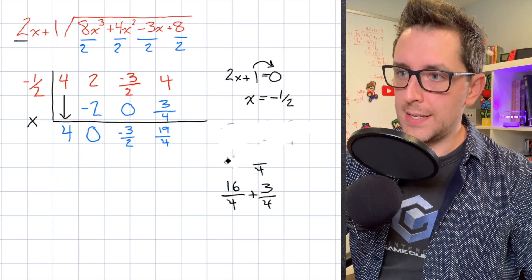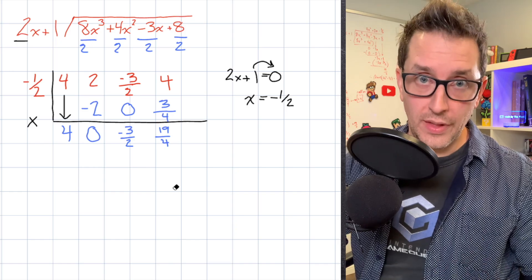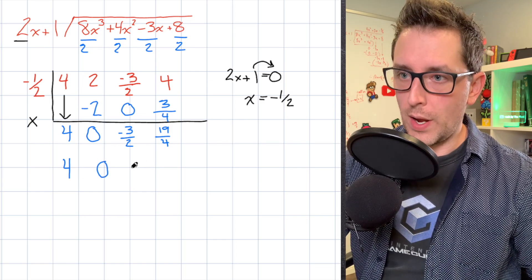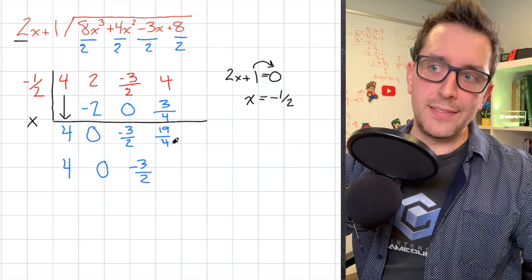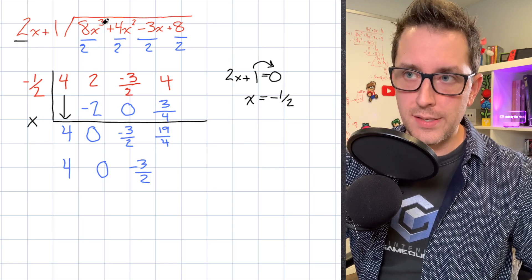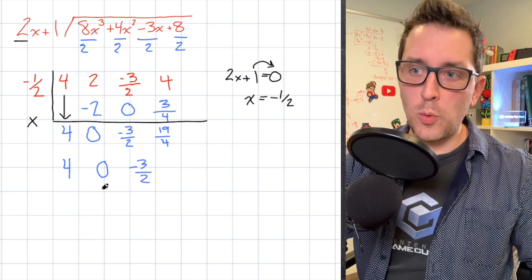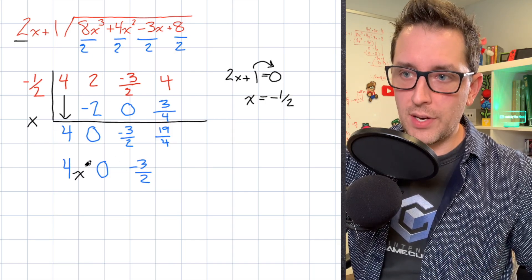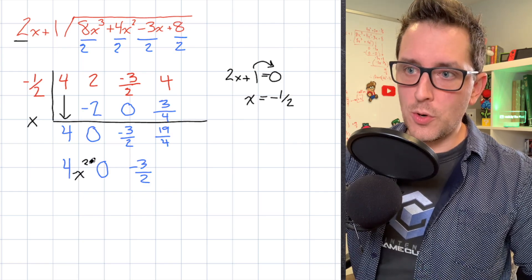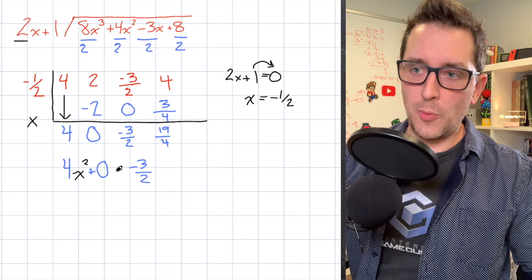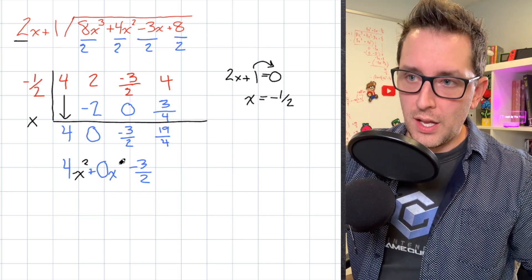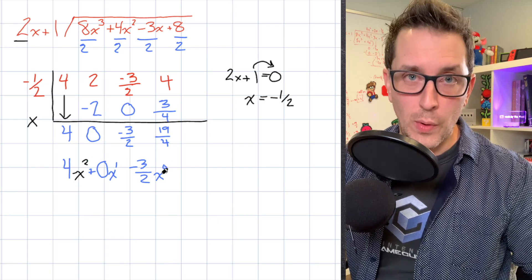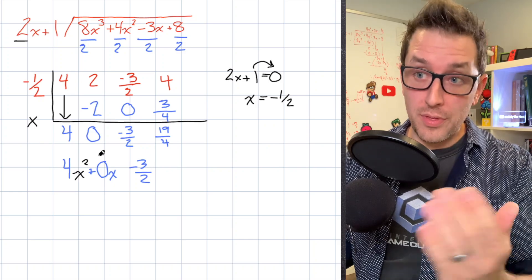Now things start looking a little different from regular synthetic division. Normally, the numbers we get form the coefficients of our quotient. Since we were working with a cubic dividend divided by a degree-1 divisor, the first term of the quotient has degree 2 — an x squared term. Reducing the power by 1 each time moving left to right, we end up with the quotient expression. The 0 makes one term drop out, and we get our quotient written out cleanly.